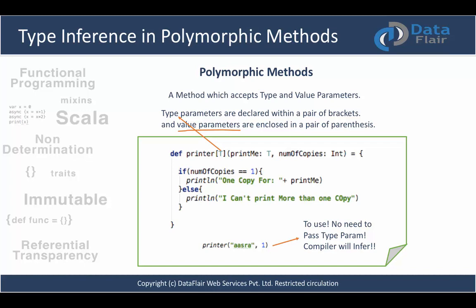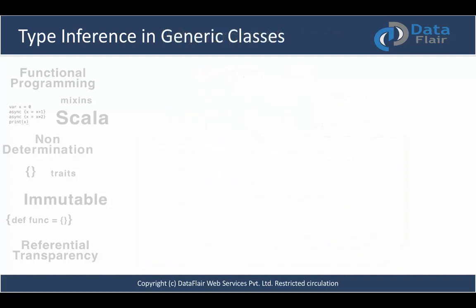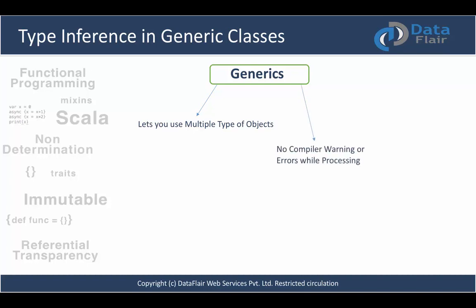Now let's talk about type inference in generic classes. Just as we first understood what a polymorphic method is, let's understand what generics are. The term 'generic' is similar to 'general' — it lets you use multiple types of objects, not just a single type, without compiler warnings or errors while processing those objects. Generics provide a means of using multiple object types. This concept exists in Java and Scala also has generics.